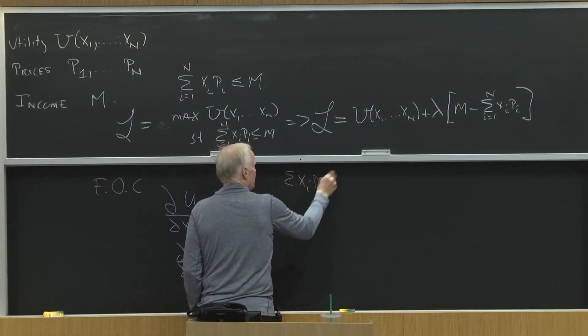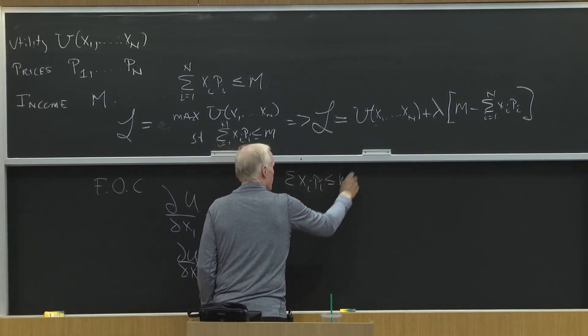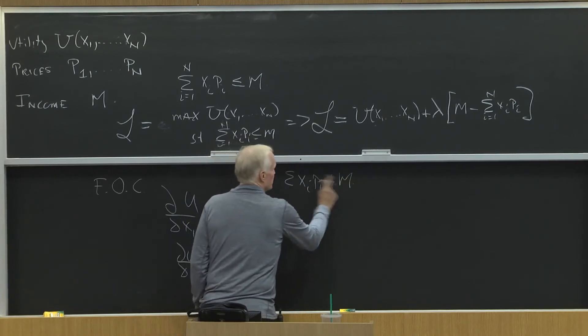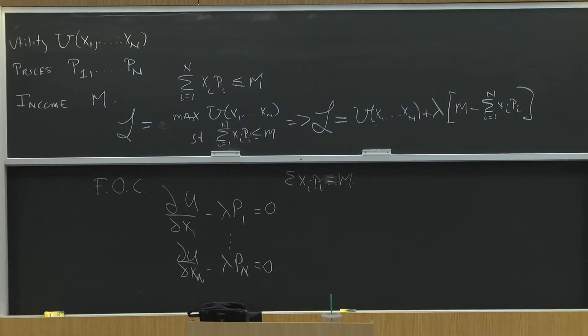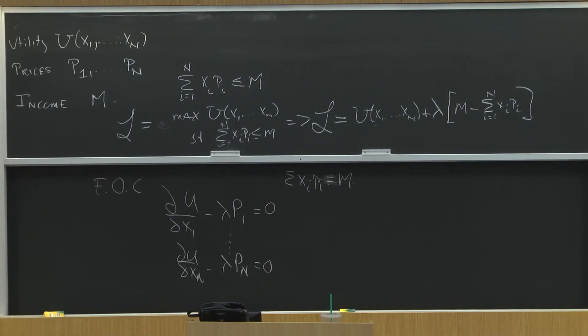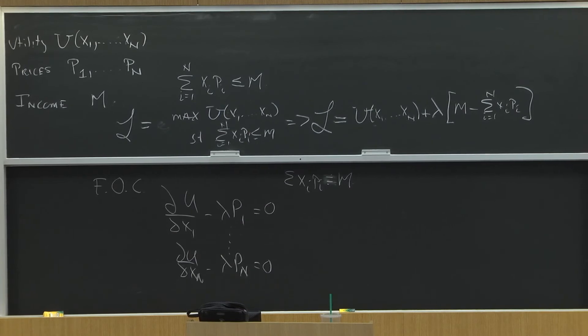So sum of xi pi less than or equal to m. Or sorry, I'm just going to say equals. I'm going to do the typical case, and I'm going to assume that you exhaust all your income.